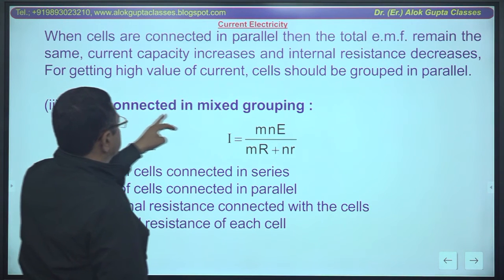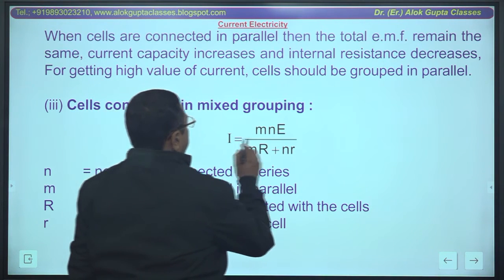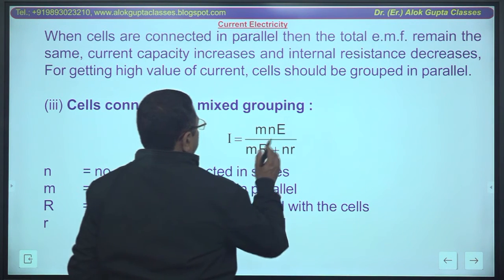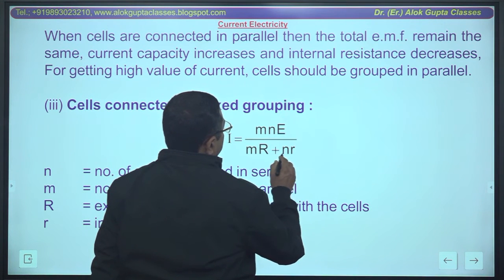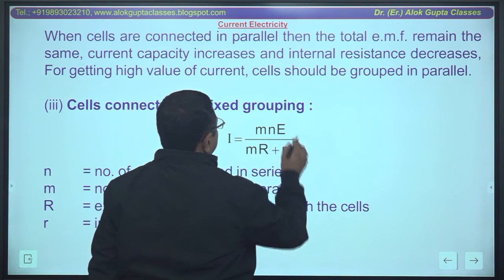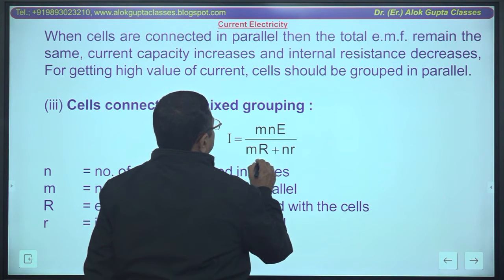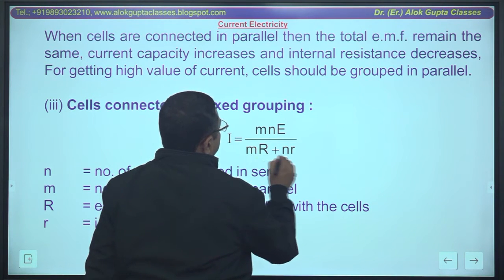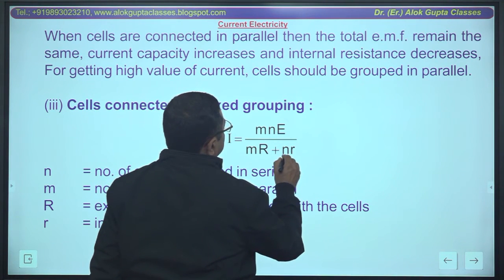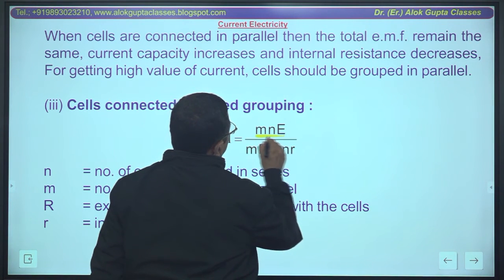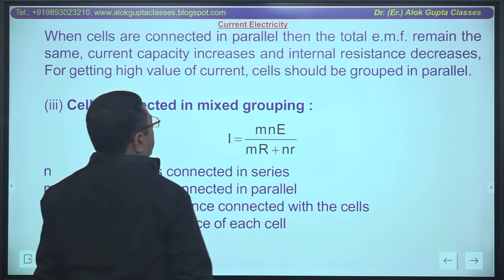Mixed grouping: cells connected in mixed grouping, i is equal to mnE upon mR plus nr. Remember this - in mixed grouping, capital R with parallel factor m comes and small r with series factor n comes, and mnE - both m and n and E come together.